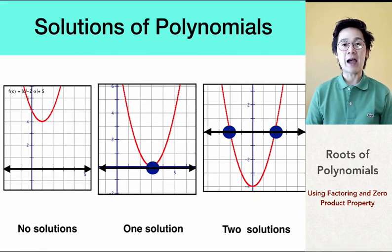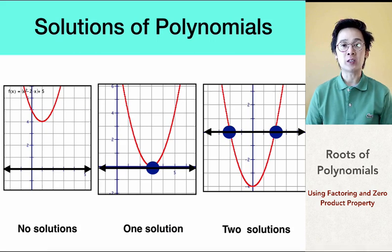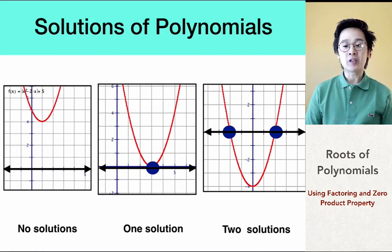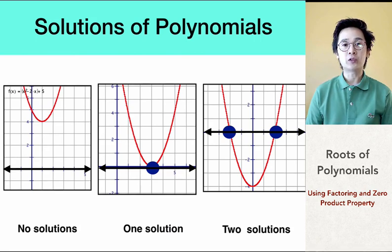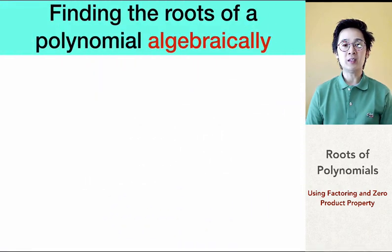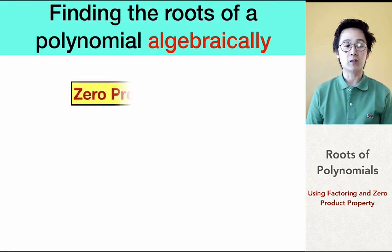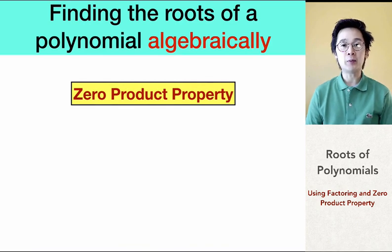When we are working with a graph and finding the roots, all we have to do is count the number of intersections of the graph along the x-axis. Not all polynomials are represented by a graph, so we're going to use an algebra technique — specifically the zero product property — to find the roots of a polynomial algebraically.